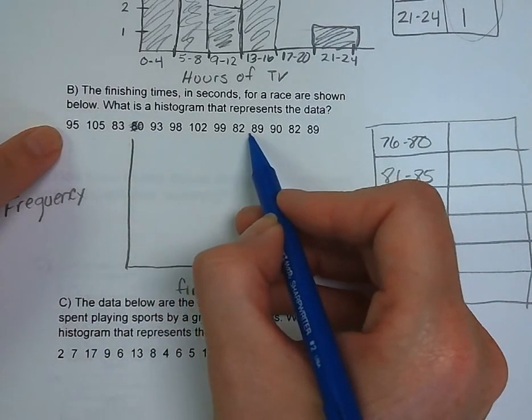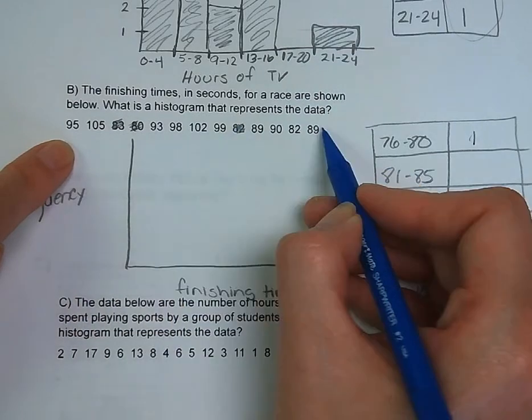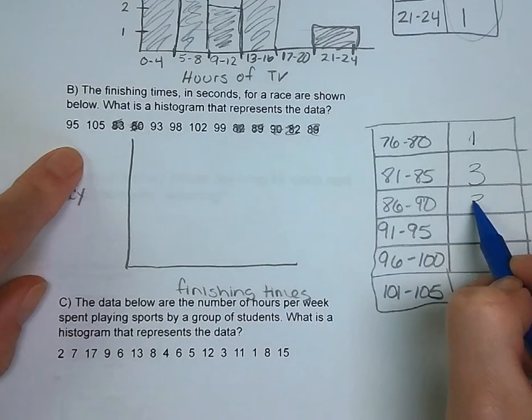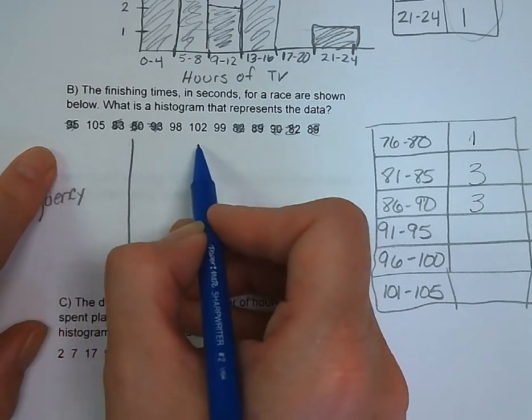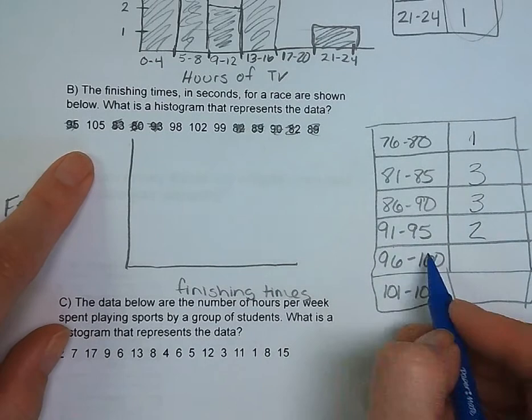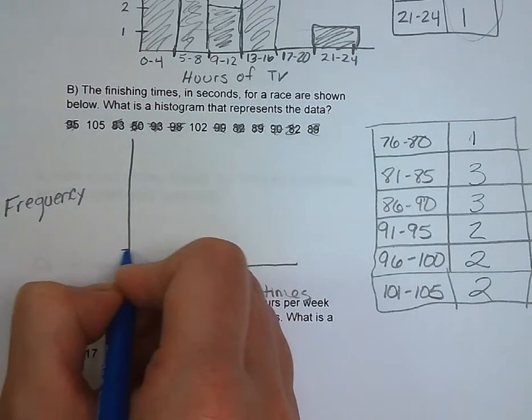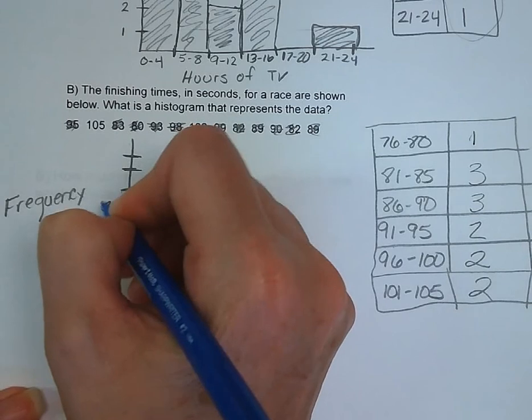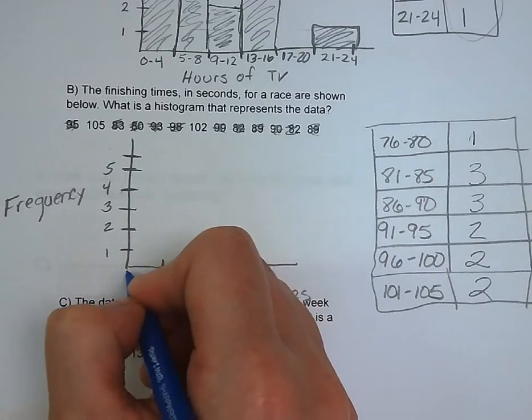Now we need to count up how many show up in each interval. 76 to 80, we've got 1. 81 to 85, we've got 3. 86 to 90, 3. 91 to 95, 2. 96 to 100, 2. And 101 to 105, 2. I would say that most of the time, your y-axis is really kind of going to go by 1s. And you probably won't go any higher than 5 or 6. We're not going to give you a giant data set that you're going to have to deal with.